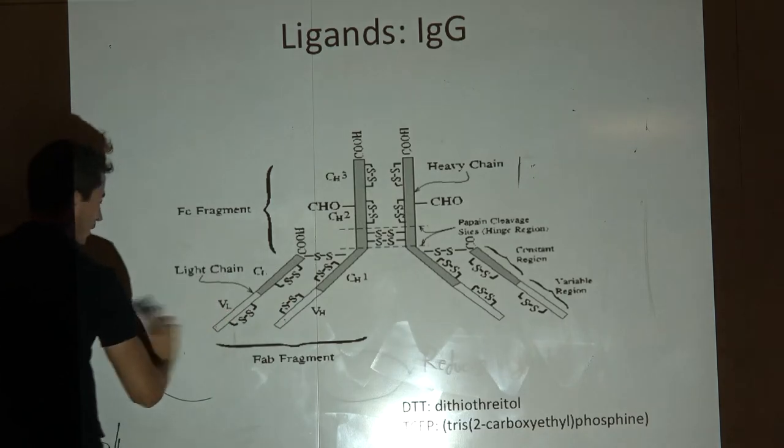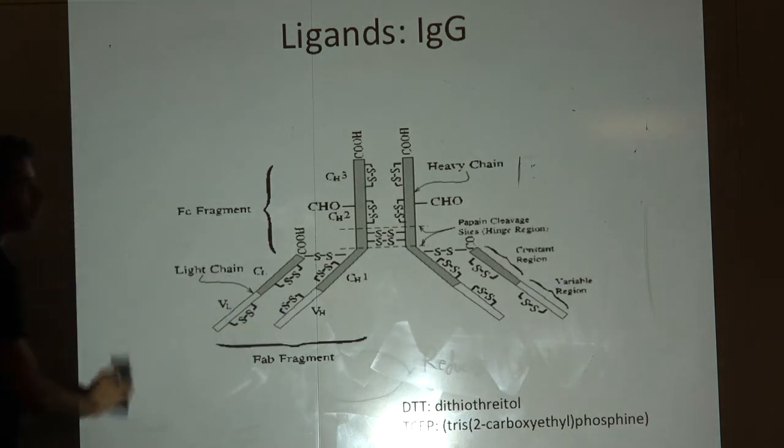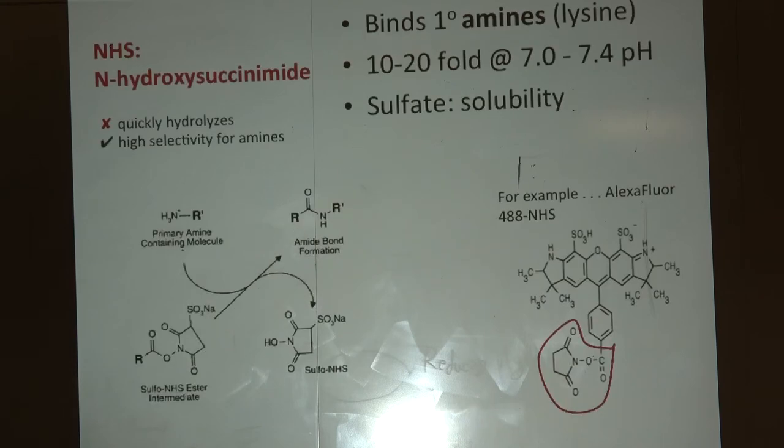This is an active area of research - how can we be selective for these amines rather than binding to those in the binding pocket. Now we're going to go through different molecules that we can use to do chemistry on a protein or nanoparticle.